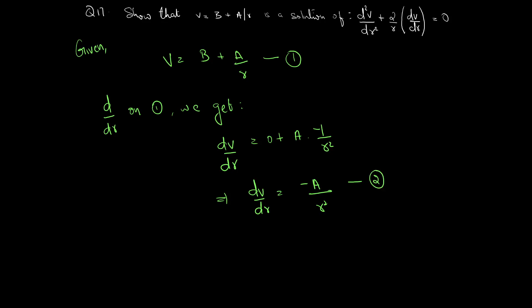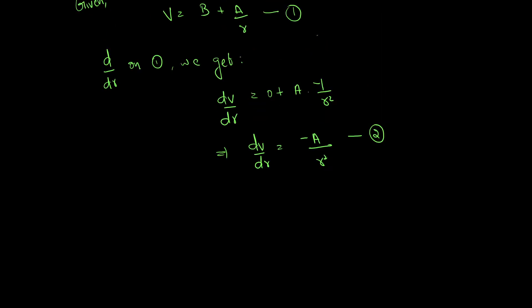Now we need to differentiate equation 2 again with respect to r. Taking d/dr on equation 2, we get d²v/dr² = 2a/r³. This is equation 3.